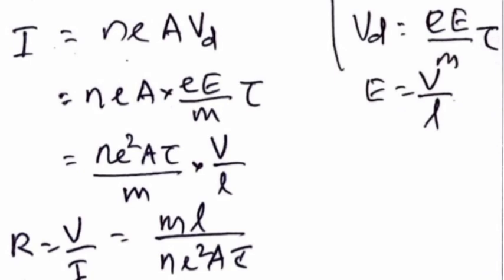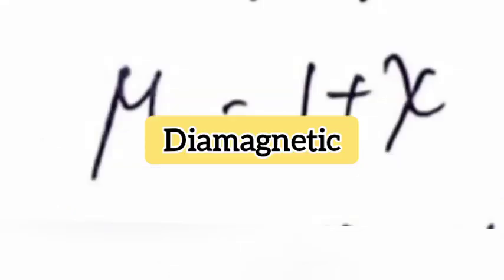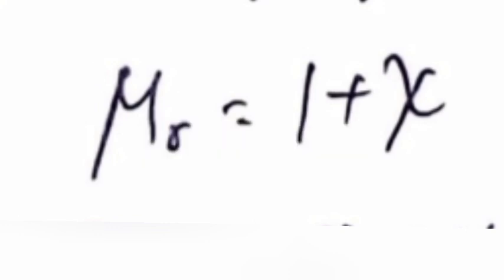Question 9: Relative permeability of a material mu R less than 1. Identify the magnetic material. Write the relation between relative permeability and magnetic susceptibility. Answer: Diamagnetic. Mu R is equal to 1 plus chi.